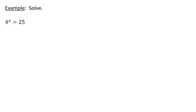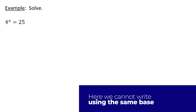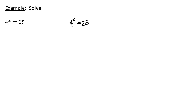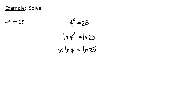Next we're asked to solve 4 to the power 4x equals 25. There's just no way to get these both to the base of 4. So I take the natural log of both sides, and using the power property, that is x times ln 4 equals ln 25. Since ln 4 and ln 25 are just numbers, we divide both sides by ln 4, giving ln 25 divided by ln 4.